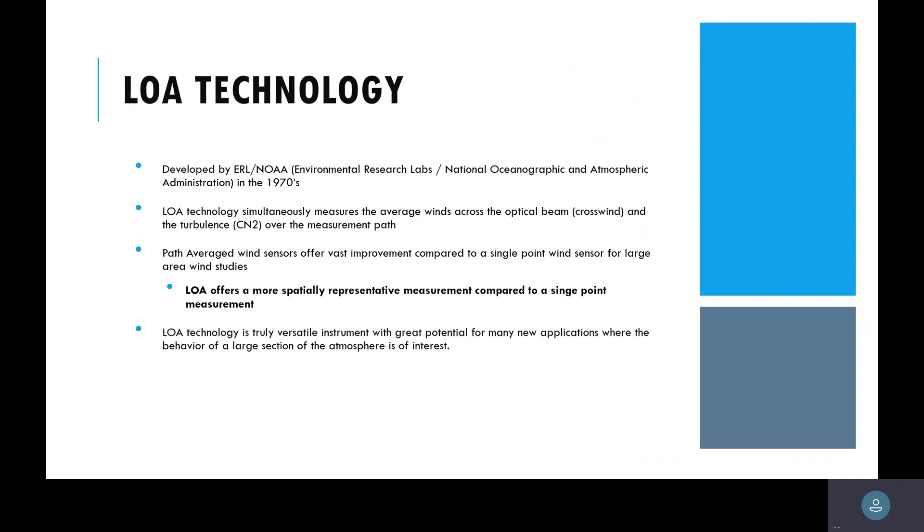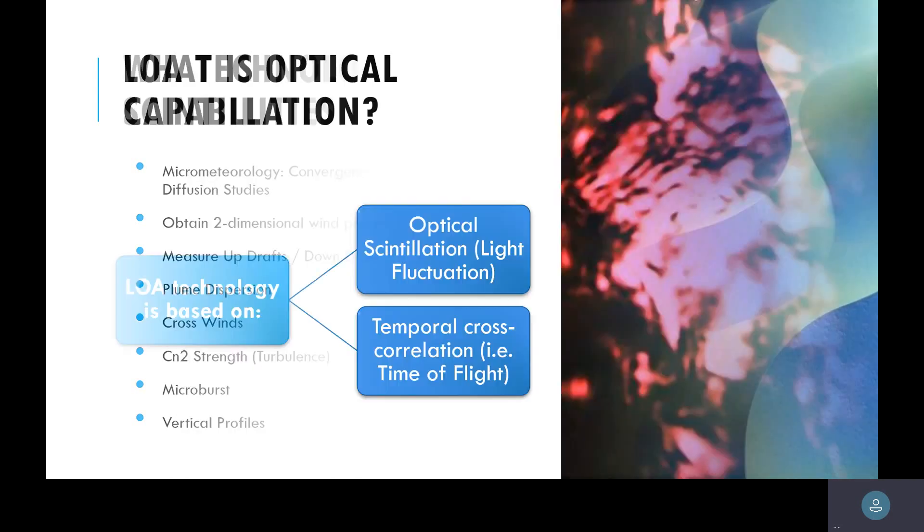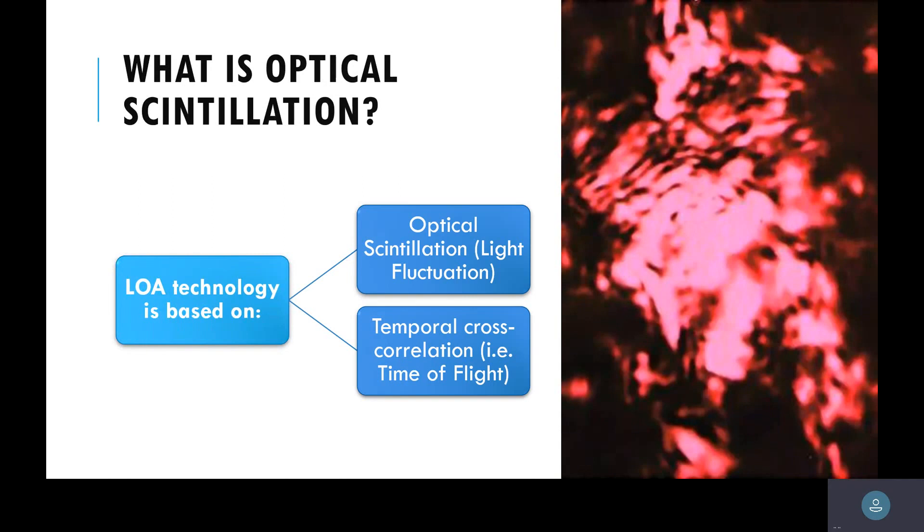It's got a lot of potential for new applications, but it's not going to be inexpensive. Some of the capabilities of LOA are you can do micrometerology, convergence, divergent studies. You can do two-dimensional wind profiles. You can measure updrafts and downdrafts, plume dispersion. That's what the military uses it for. You can do crosswinds, which is really what I think is going to be important here.